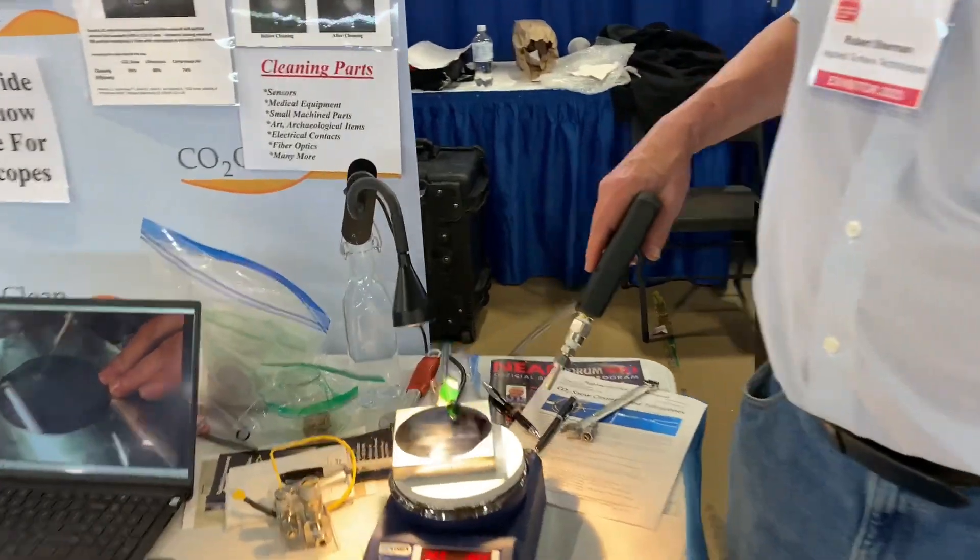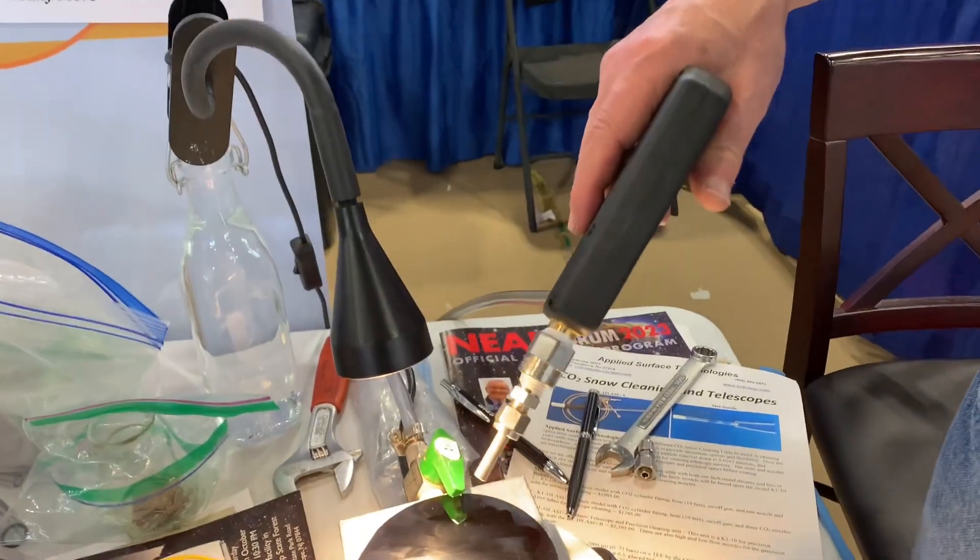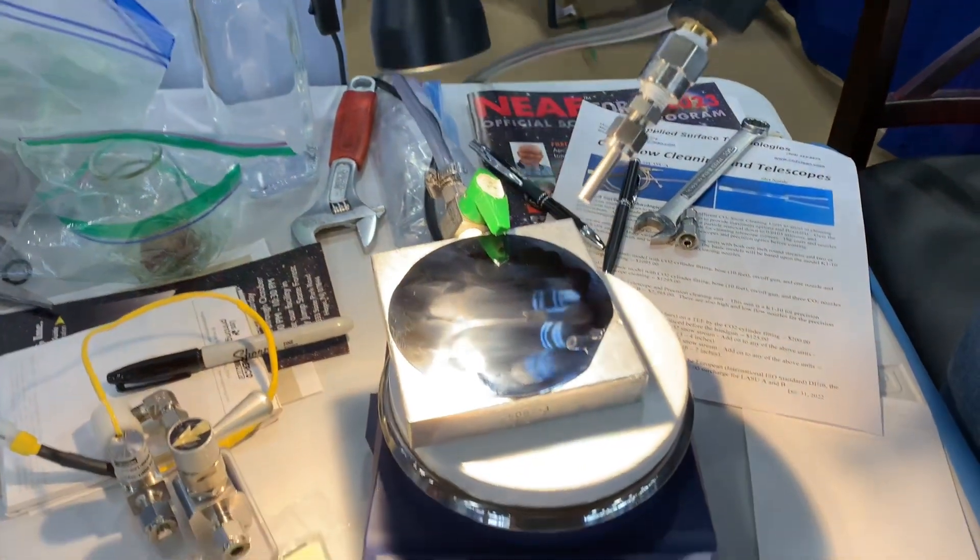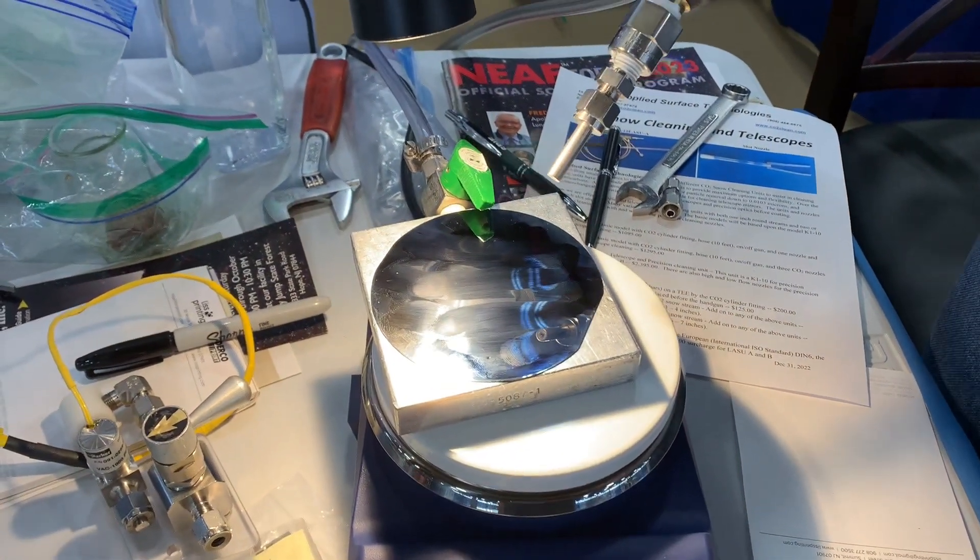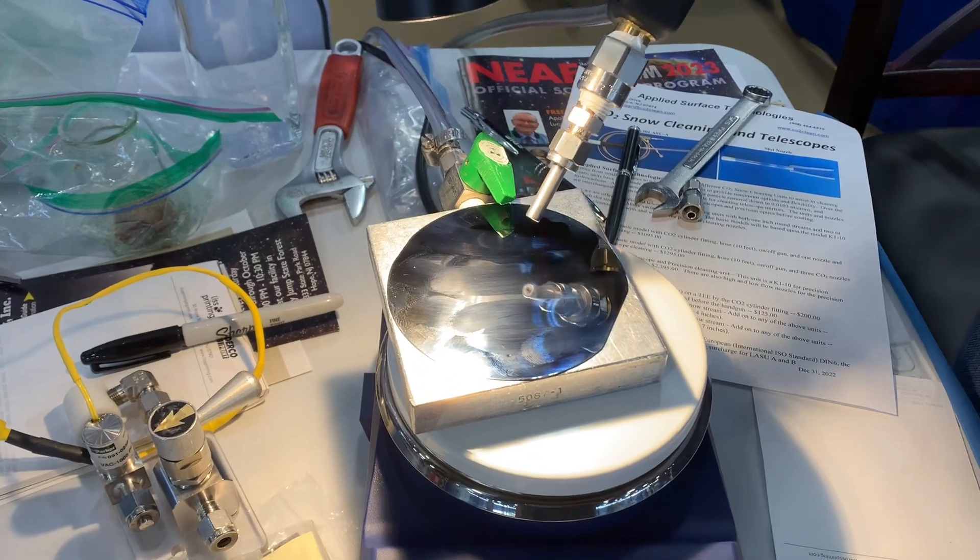This is carbon dioxide snow cleaning, a way to clean all types of surfaces including optics and telescope mirrors using carbon dioxide.